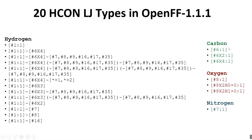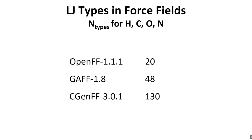Similarly, for carbon there's a default parameter which could get modified if it turns out to be an sp or sp3 type carbon. Putting this in context: there are 20 H, C, O, and N Lennard-Jones types in Open Force Field currently. GAFF 1.8 has 48, as best I can tell, and CGENFF — which is a CHARMM general force field — a recent release has 130. But it's important to note that it's not really clear, certainly for GAFF, how different all these parameters really are.